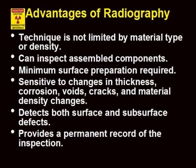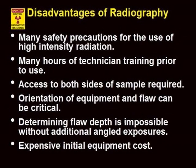Radiographic inspection has the following advantages: radiography is not limited by material type or density; assembled components can be inspected; the surface does not need special preparation; the method is sensitive to changes in thickness, corrosion, voids, cracks, and material density changes; radiography detects both surface and subsurface defects; and the method provides a permanent record of the inspection. The limitations include: many safety precautions are required for high-intensity radiation; extensive technician training is required prior to use; access to both sides of the sample is required; orientation of the radiation source and the flaw can be critical; determining flaw depth is impossible without additional angled exposures; and the initial equipment cost is expensive.